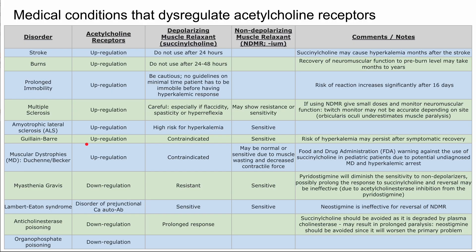Guillain-Barré syndrome also causes upregulation of acetylcholine receptors. Here, succinylcholine is contraindicated. The risk of hyperkalemia will persist even after symptomatic recovery — so even if the patient has no symptoms, there is still a risk of hyperkalemia. Guillain-Barré patients will also be sensitive to the non-depolarizing agents.